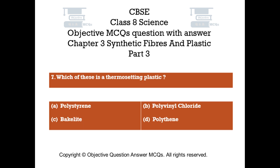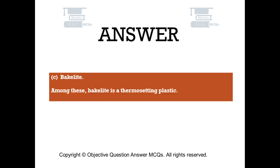Question number seven. Which of these is a thermosetting plastic? Option A: polystyrene. Option B: polyvinyl chloride. Option C: bakelite. Option D: polythene. The right answer is option C — bakelite. Among these, bakelite is a thermosetting plastic.